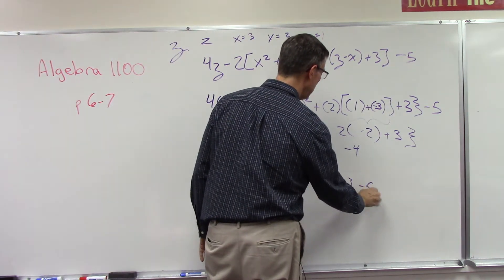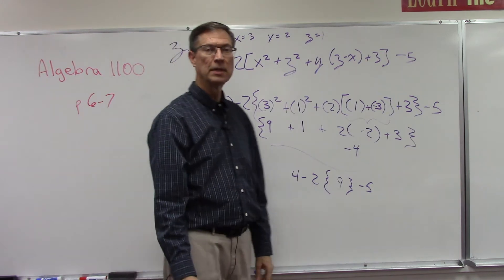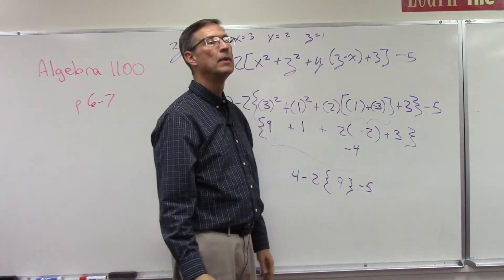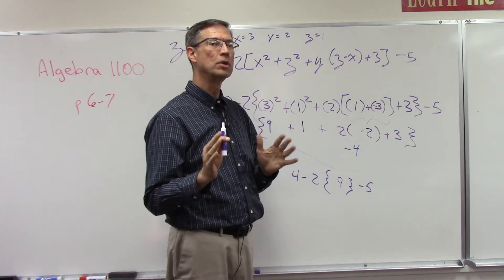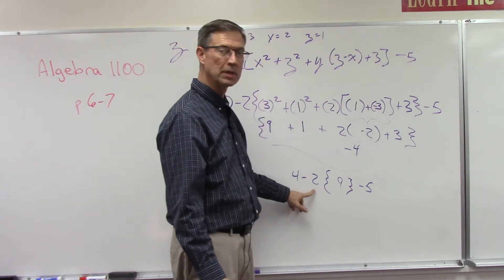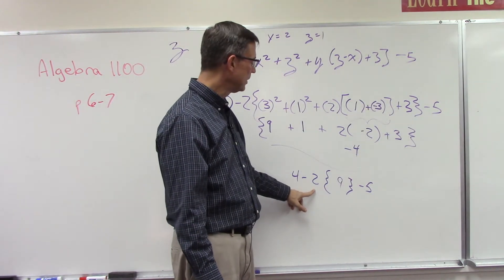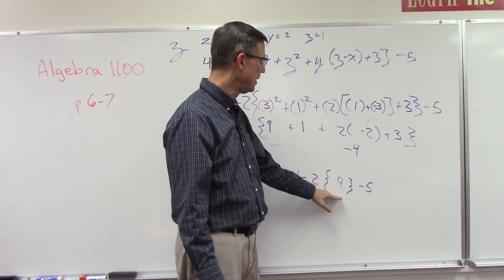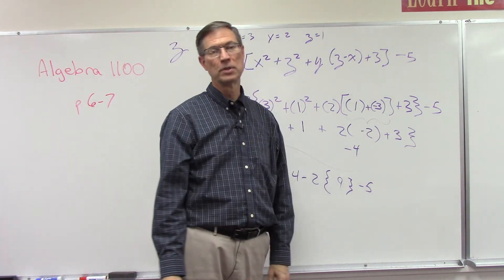And then minus 5. Now the tempting thing, and this honestly, if I were to predict where a student is going to make a mistake here, I'm going to say they're going to do this: 4 minus 2 to get 2, and then they'll take the 2 times the 9, and then take the 18 minus 5 and get 13 and get it wrong.